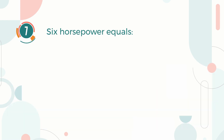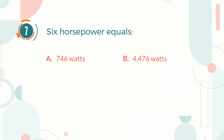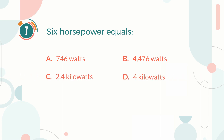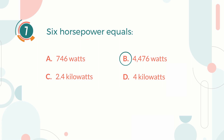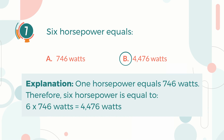Number seven: Six horsepower equals — A) 746 watts, B) 4,476 watts, C) 2.4 kilowatts, D) 4 kilowatts. The correct answer is B, 4,476 watts. One horsepower equals 746 watts; therefore, six horsepower equals 6 multiplied by 746 watts, which equals 4,476 watts.